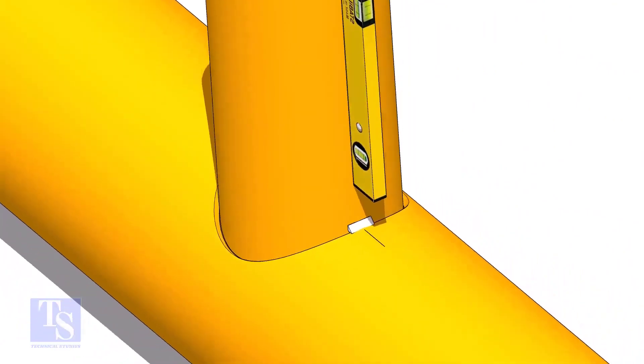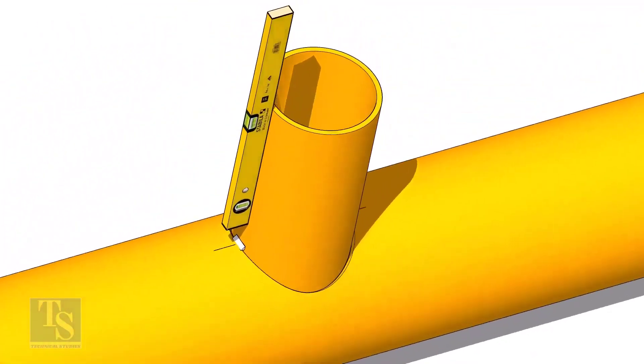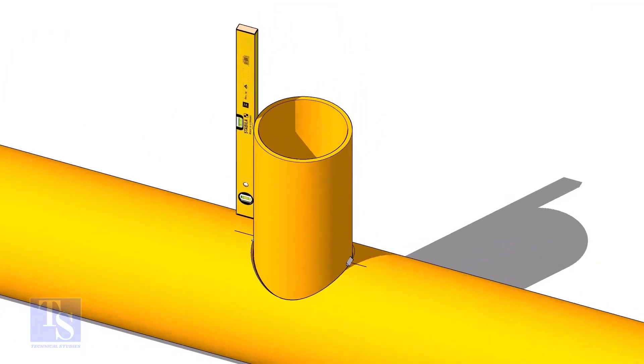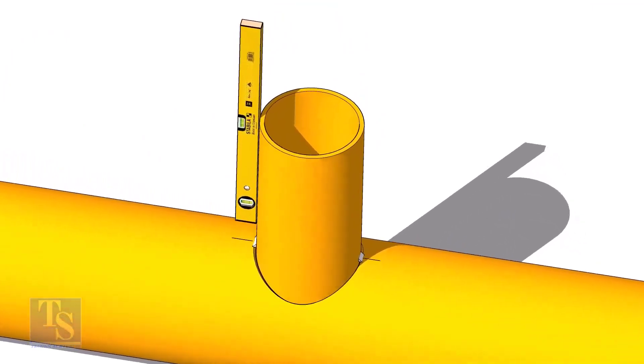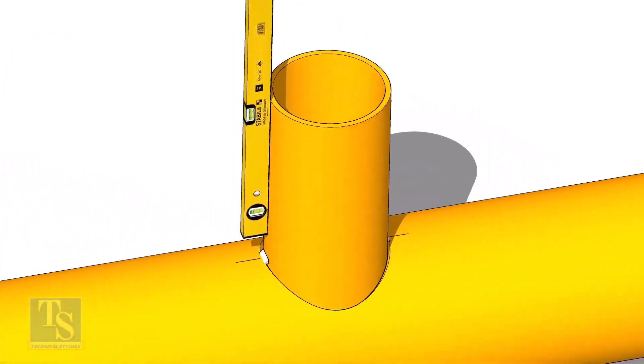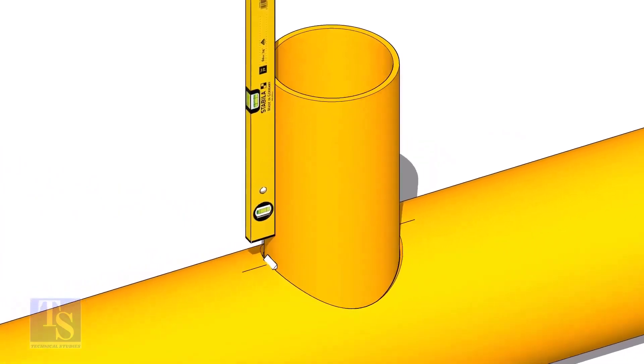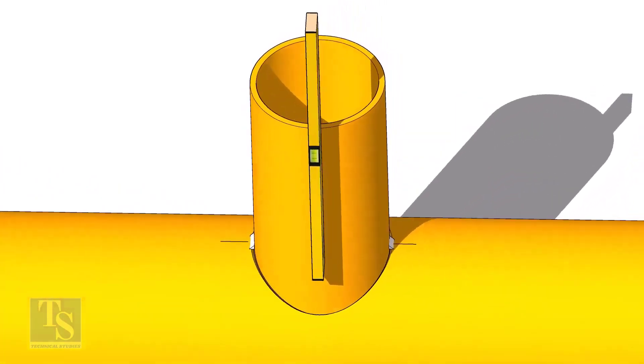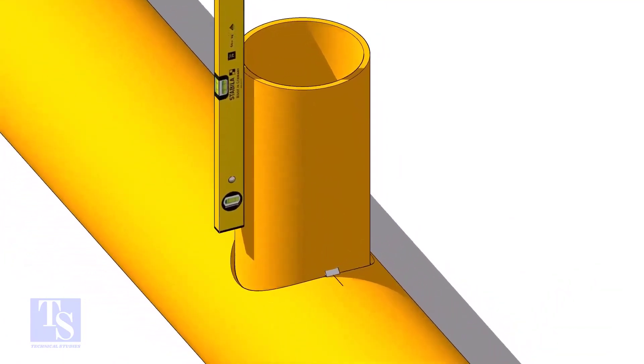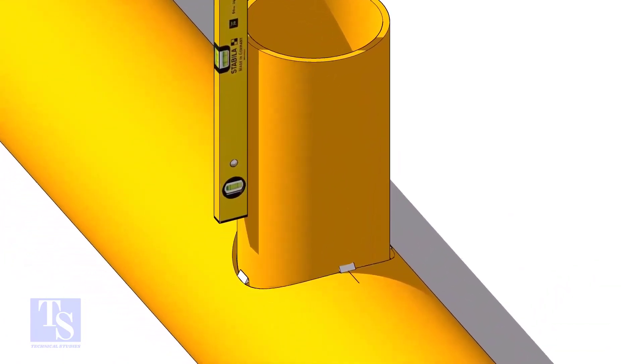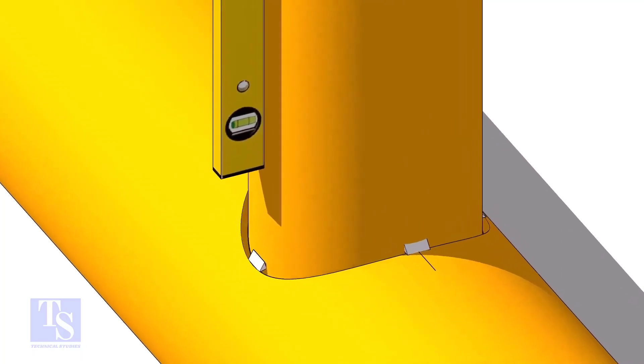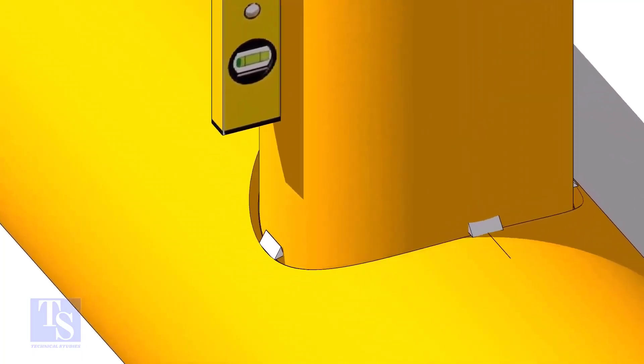Put the branch in its position. Tack weld at one side and check the level of the branch. If the level is correct, tack weld on the other side. Level the other face of the branch and tack weld on both sides.